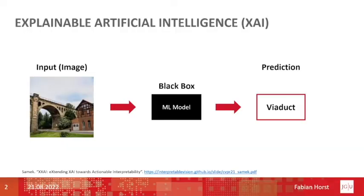I would like to introduce the concept of explainable AI, or explainable artificial intelligence, with an example from the field of image classification. On the left side of the slide, we can see an image depicting a viaduct, but also other objects like a house and trees. Let's say we want to classify this image.